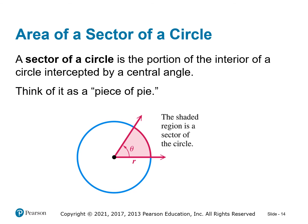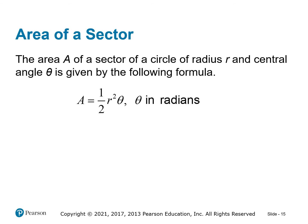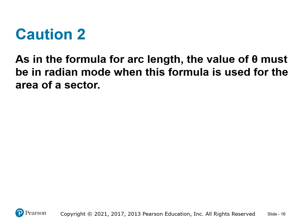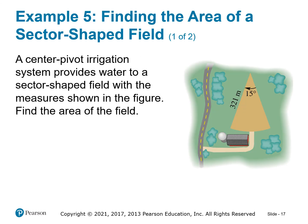The last topic is the area of a sector of a circle — think of it as a piece of pie. A sector is the portion of the interior of a circle created by angle theta of radius r and the corresponding arc length. The area of a sector of a circle of radius r with central angle theta is: Area equals one-half r-squared theta, where theta must be in radians.